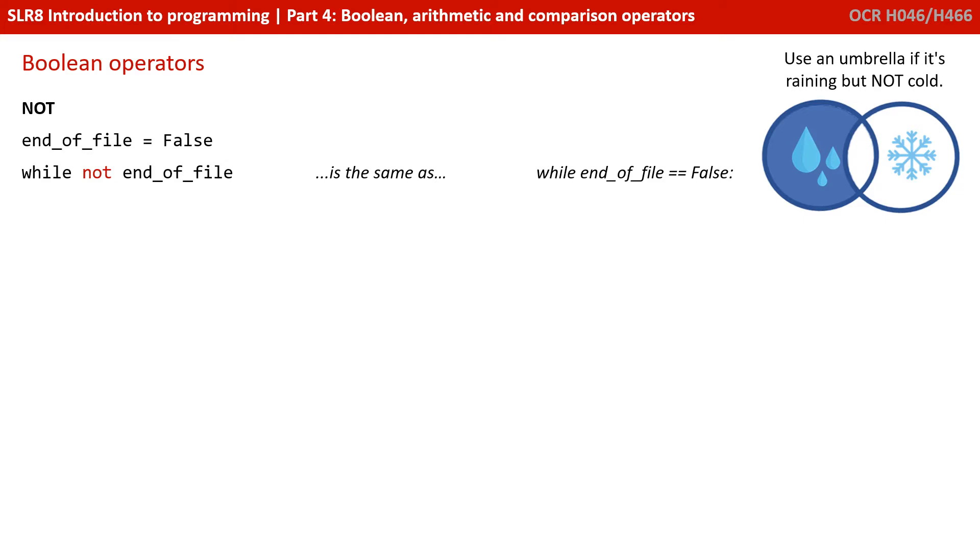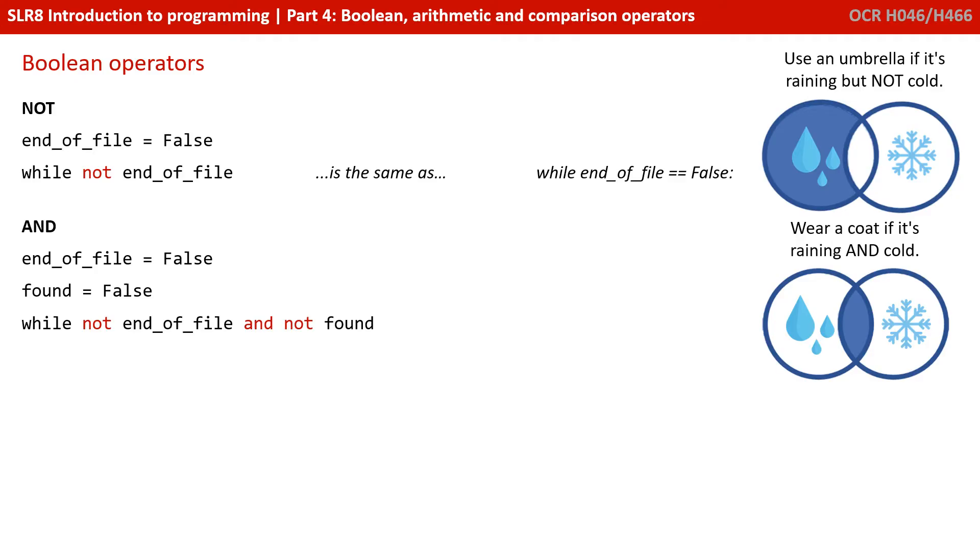There are three Boolean operators you need to be aware of and how you can use them in programming. The first is NOT. Using our little analogy on the right, you can think of that as use an umbrella if it's raining but NOT cold. A couple of typical ways you could use this: you could say end_of_file equals false, setting a Boolean flag to false, and then say while not end_of_file, while not false. This is the same as saying while end_of_file equals false. The next Boolean operator is AND. In our example, wear a coat if it's raining AND it's cold—only if both conditions are true. We're saying while we're not at the end of file and not found, both parts have to be true for the whole thing to be true.